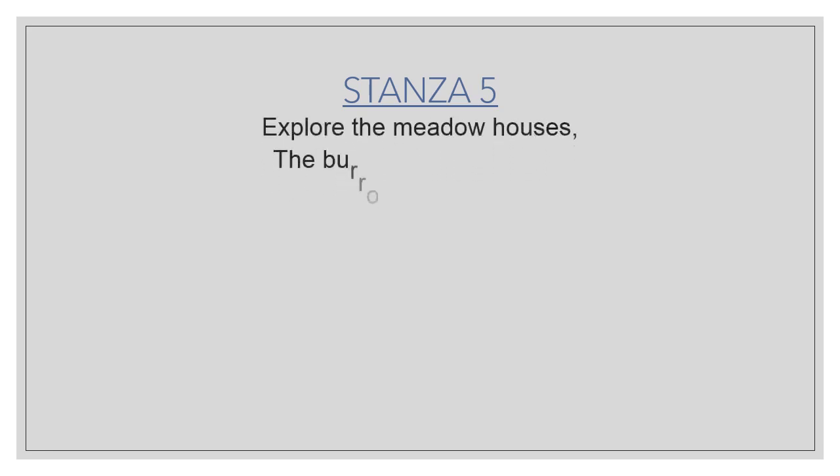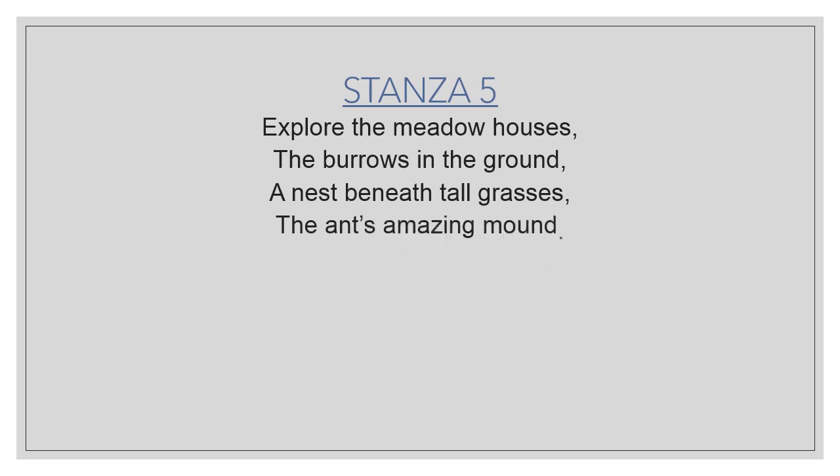Moving to Stanza Five: 'The meadow houses the burrows in the ground, a nest beneath tall grasses, the ants' amazing mound.' The poet is asking us to explore the meadow. Which animal makes a burrow? The rabbit. A nest beneath the tall grasses — there are beautiful nests beneath the tall grasses. The ants' amazing mound — amazing mound means a wonderful heap of sand they make like a mountain. The poet is asking us to look at the burrows, the nests, and the ants' amazing mound.